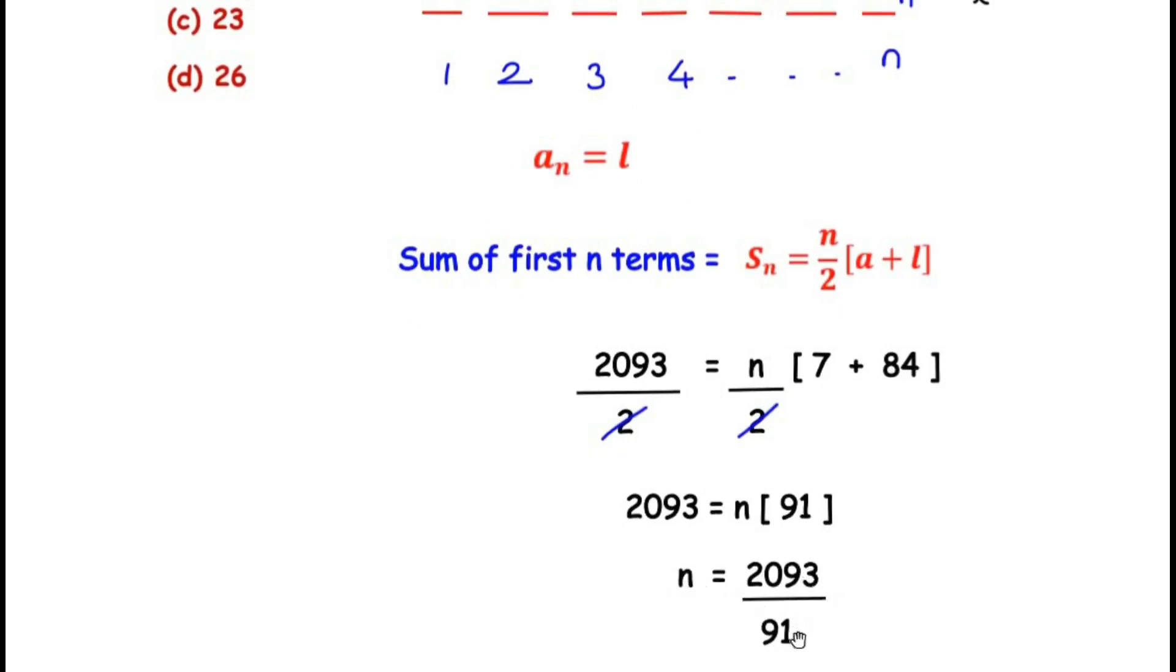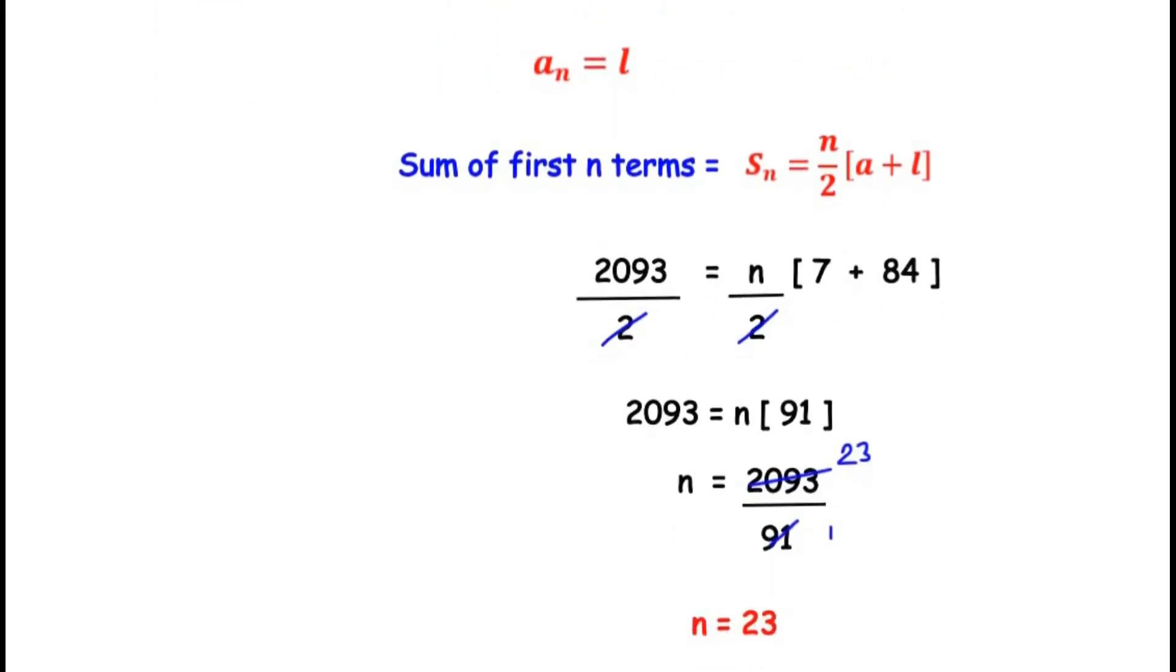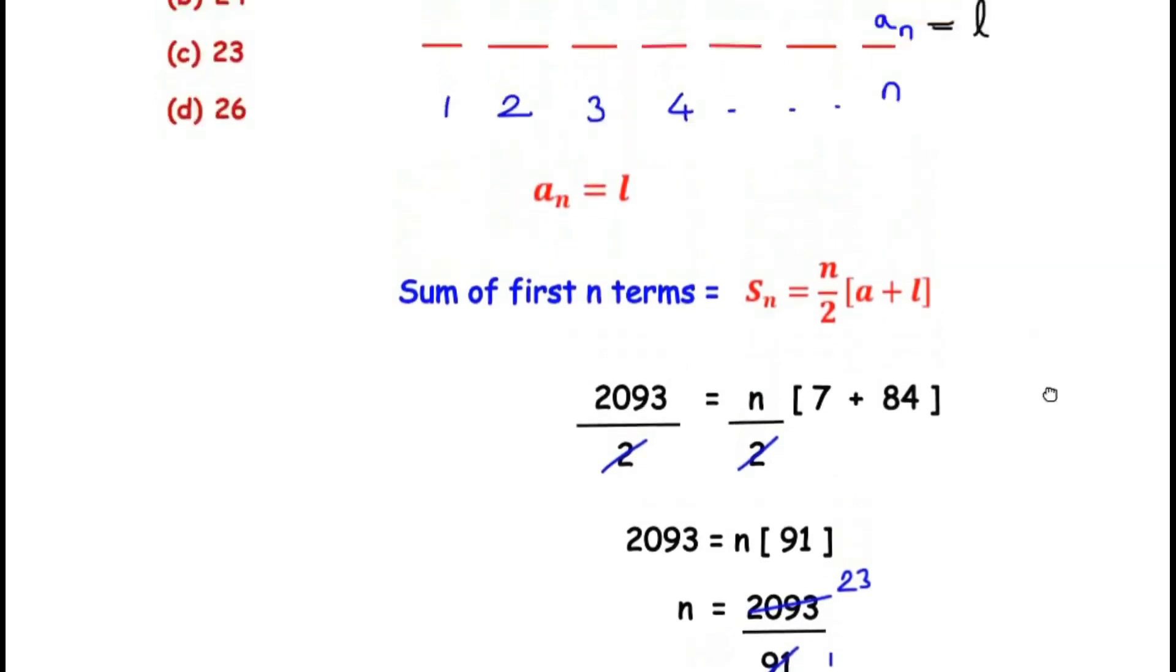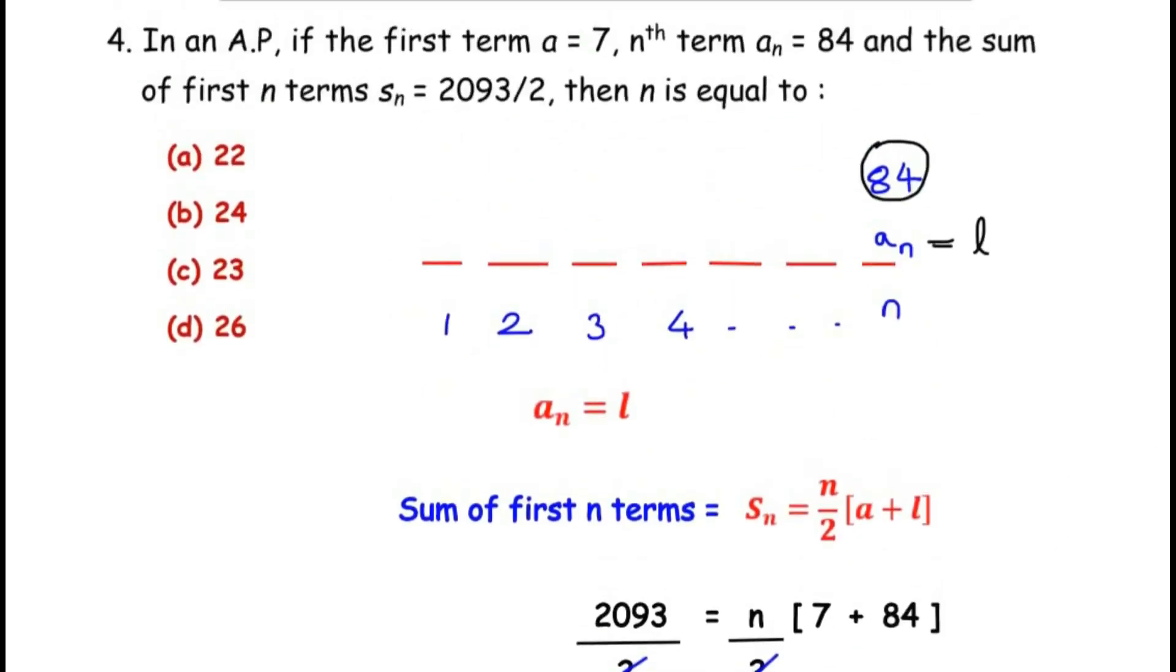Now by division or long division, 91 divides 2093 that is 23 times, so we get the value of n as 23. Let us see if this is in the options above. Here n equals 23 is our option C.